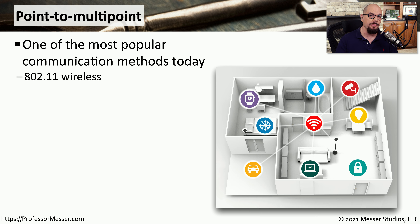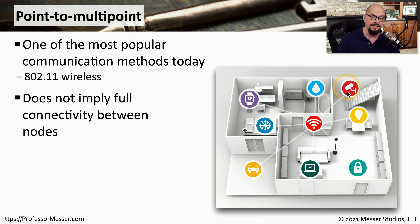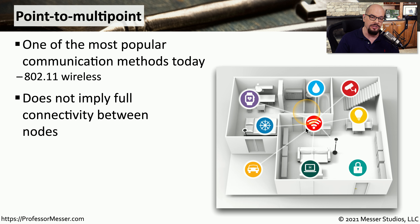It's more common to have 802.11 networks communicating from point-to-multipoint. This is probably one of the most common types of wireless networks we use today. There's not necessarily full connectivity between all of these devices. A device on one end of the network can easily communicate to the access point, but it may not be able to communicate directly with devices on the other side because they're simply too far away. There might also be configurations within the access point that allow devices to communicate to the access point and then to the internet, but with restrictions that prevent devices on the same wireless network from communicating with each other.